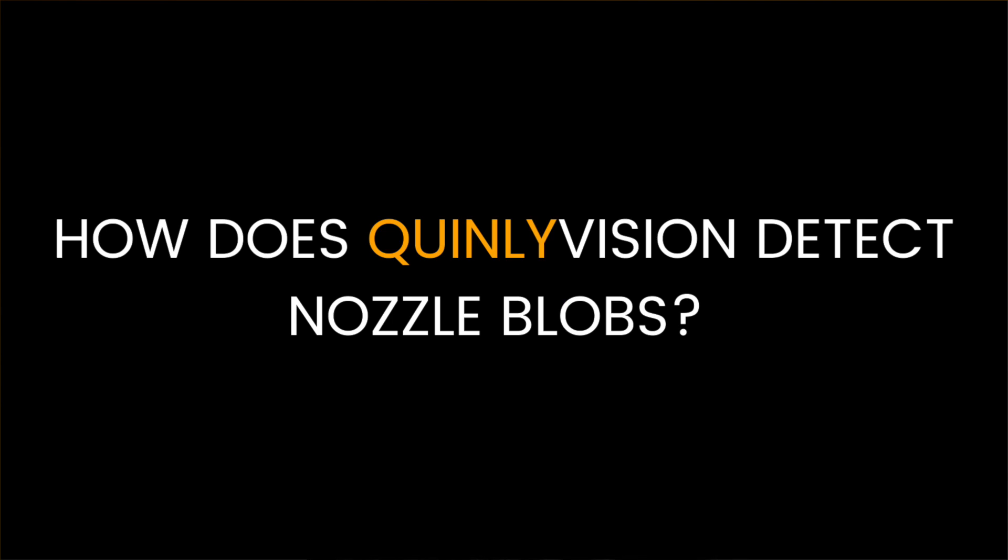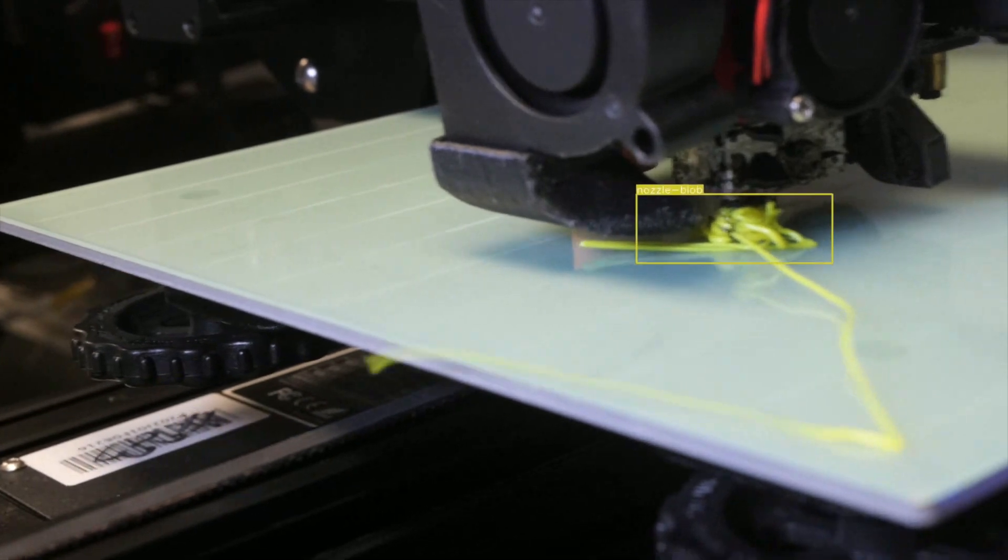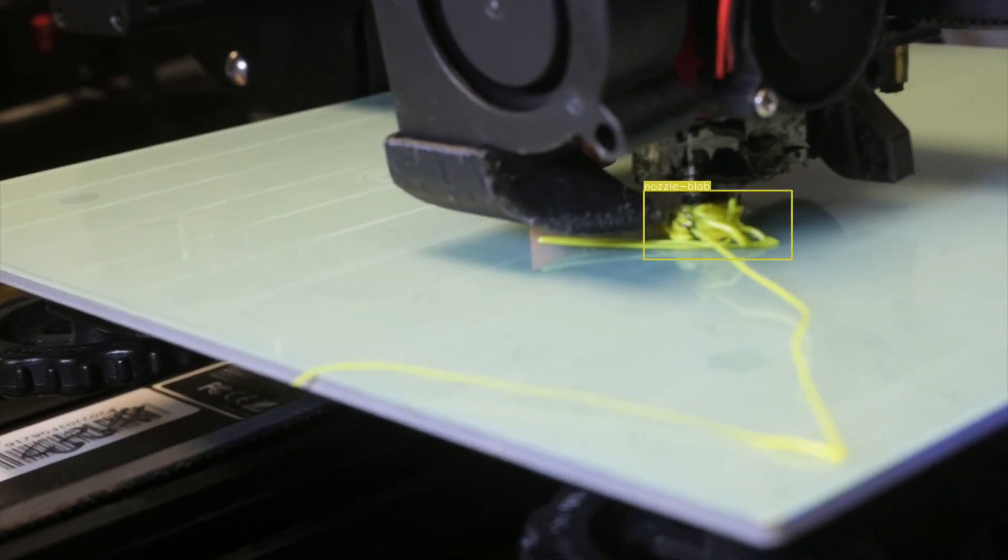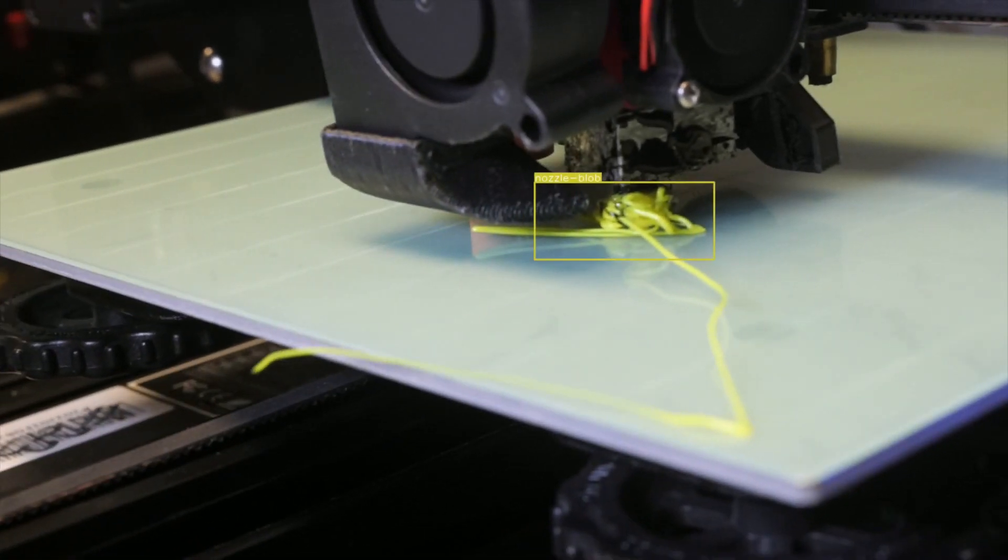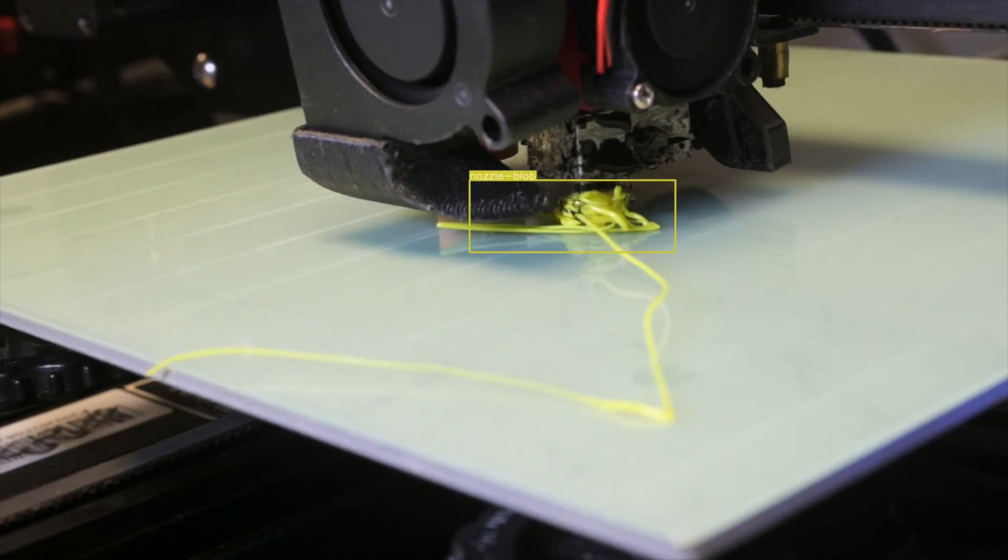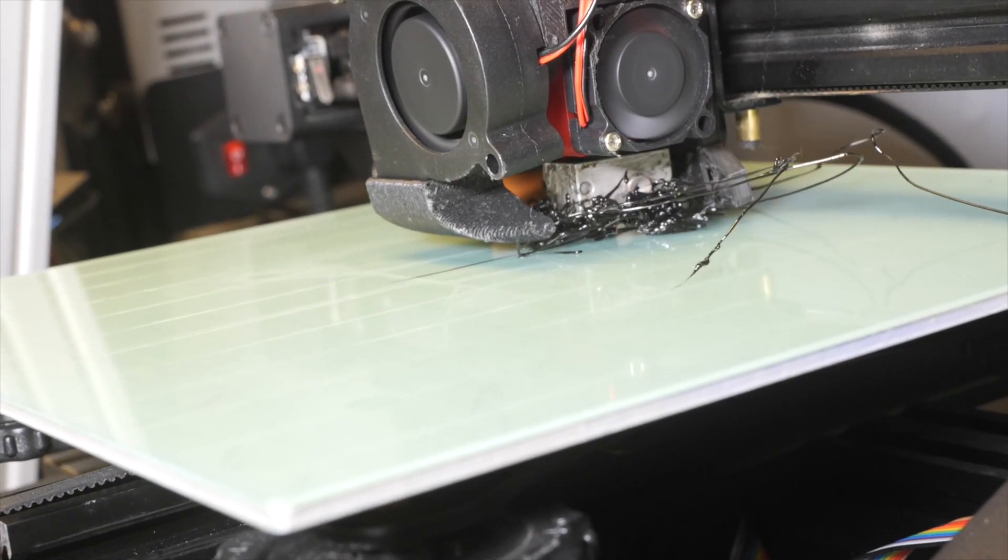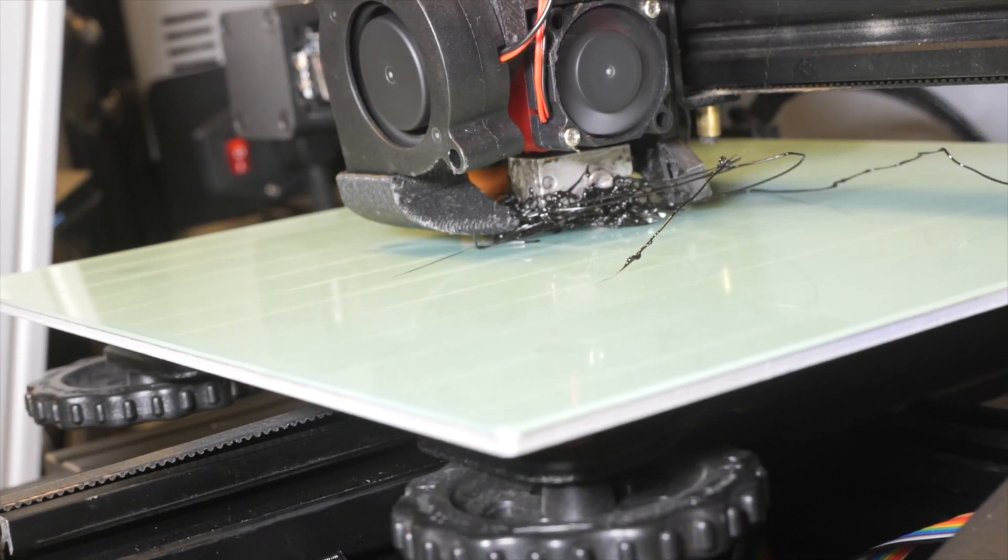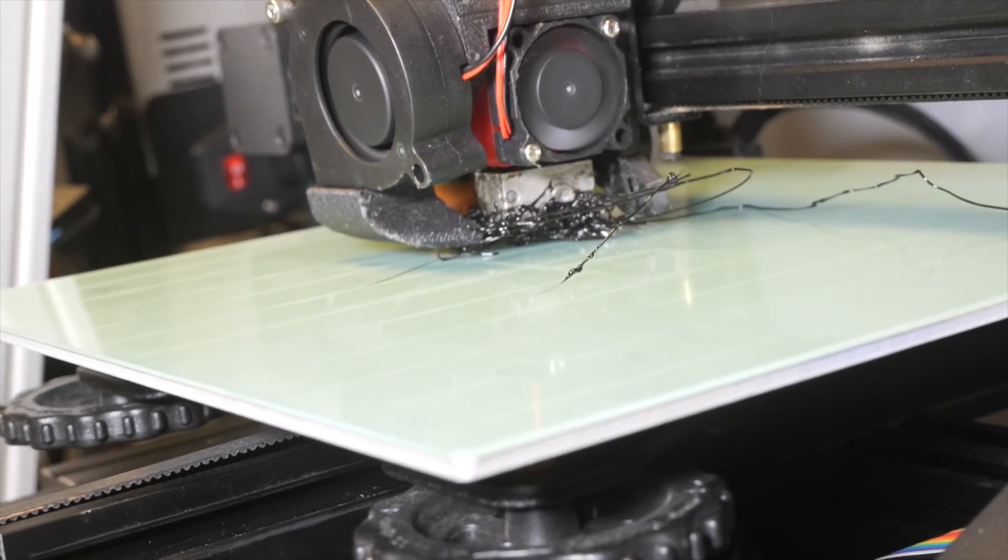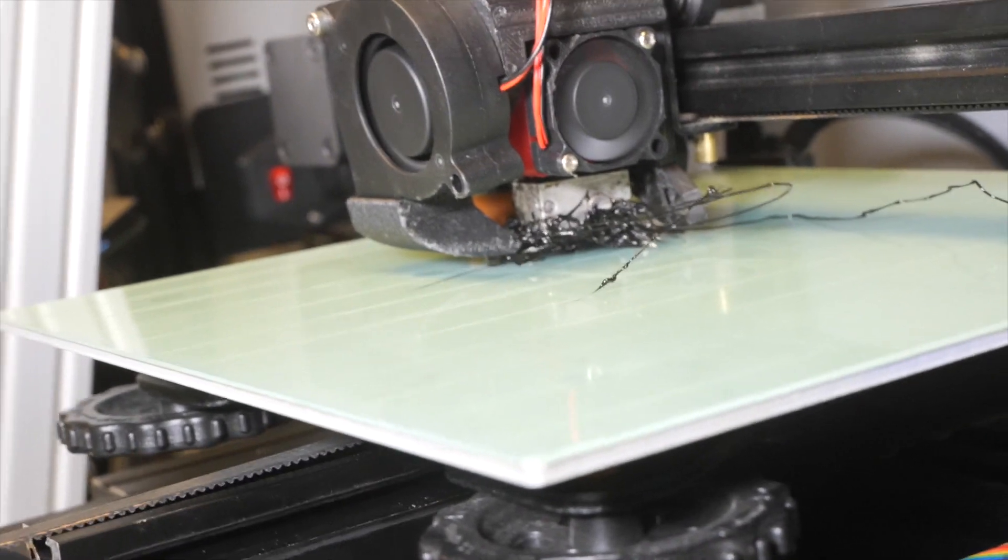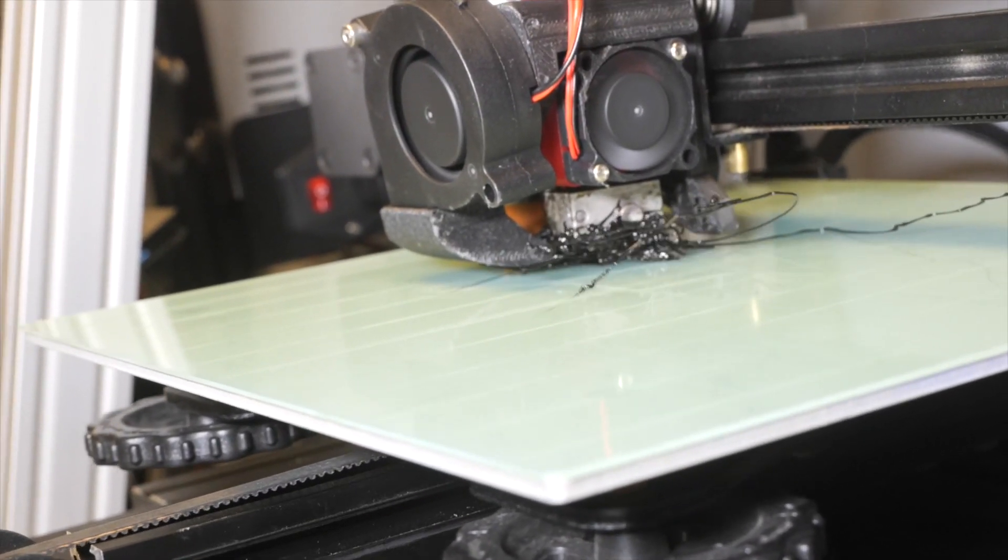When QuinlyVision is watching your print, it looks for a few specific features to detect a nozzle blob. The first thing it looks for is a material buildup around the nozzle, and then it needs to know that the material is moving with the nozzle. It can tell that it's a nozzle blob because nozzle blobs are quite a bit more dense than just spaghetti. When the material builds up around the hot end, it forms little blobs in chunks rather than individual strings.